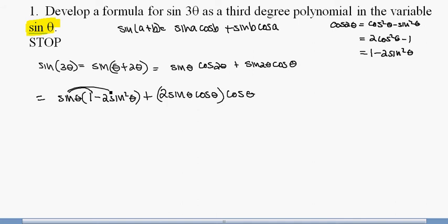I'm now going to distribute this sine and then just multiply these two here. It's really just cosine times cosine. So I get sine theta minus 2 sine cubed theta plus 2 sine theta cosine squared theta.